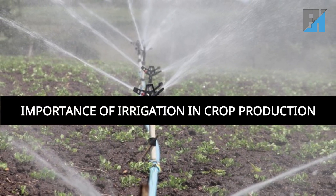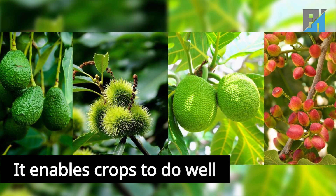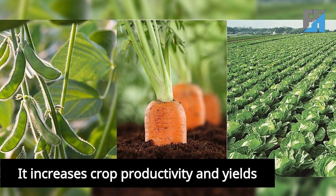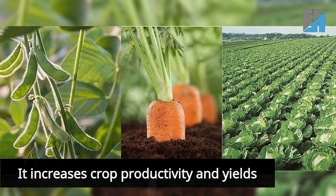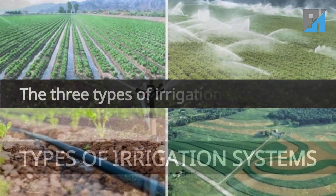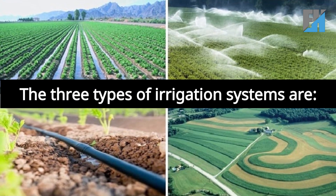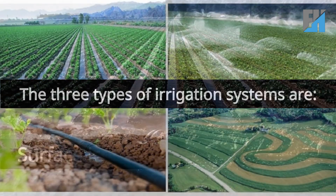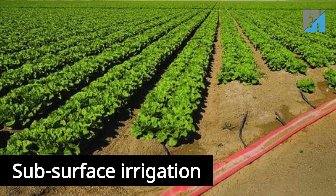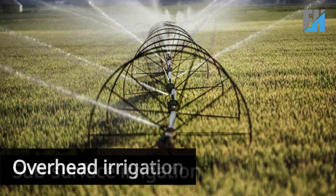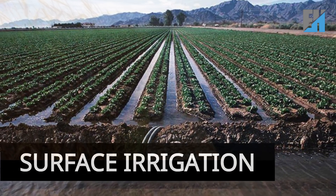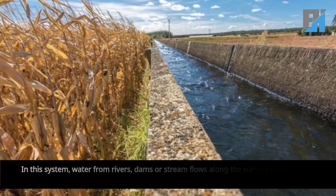Importance of irrigation in crop production: it enables crops to do well, and it increases crop productivity and yields. The three types of irrigation systems are Surface Irrigation, Subsurface Irrigation, and Overhead Irrigation.